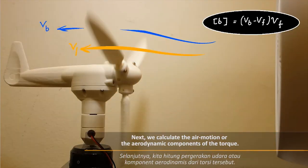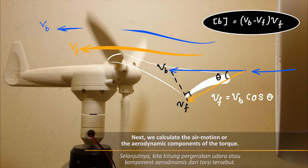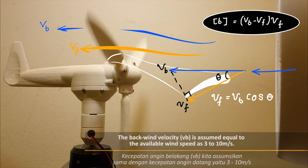Next, we calculate the air motion or the aerodynamic components of the torque. The back wind velocity, Vb, is assumed to be equal to the available wind speed as 3 to 10 meters per second.